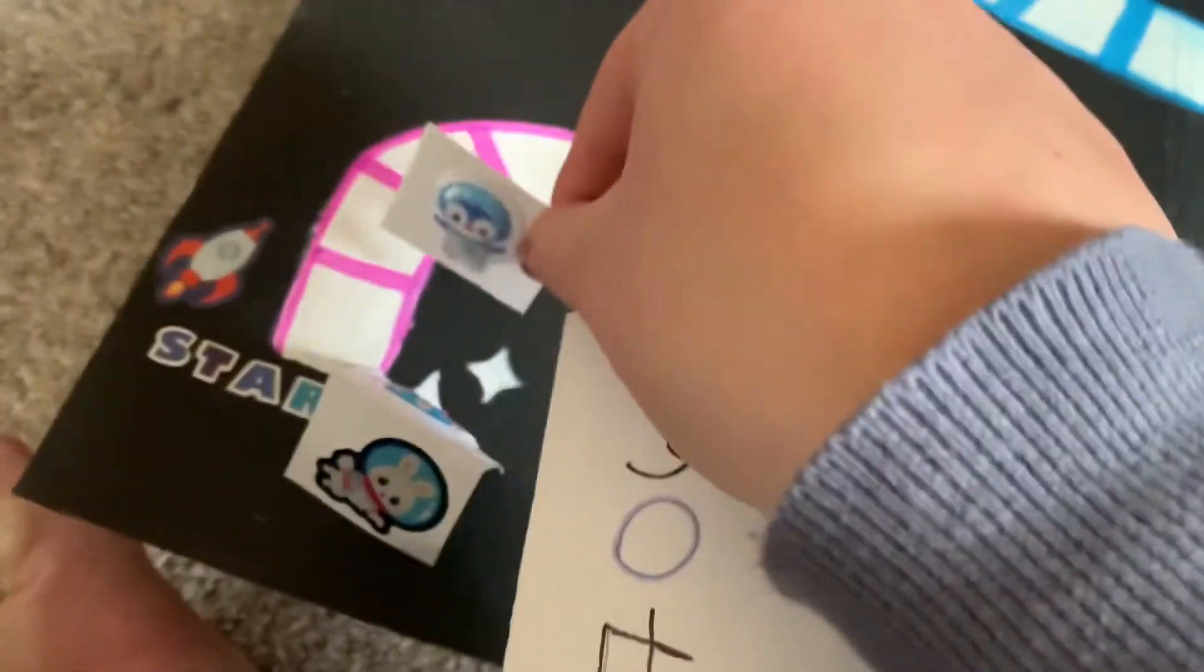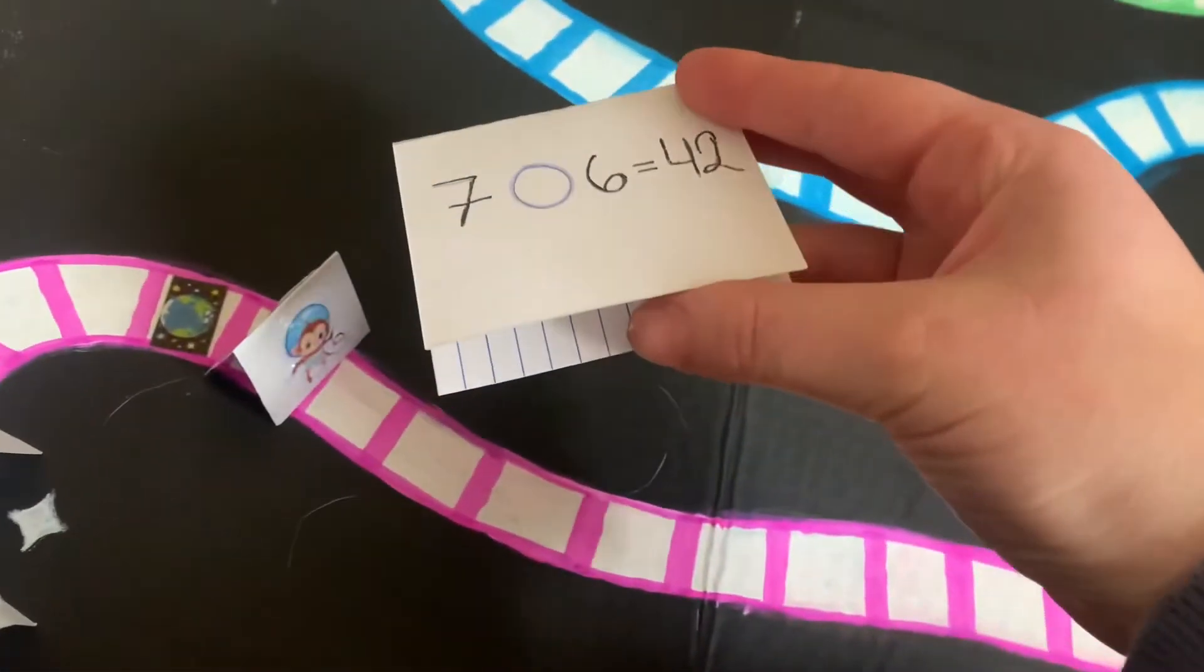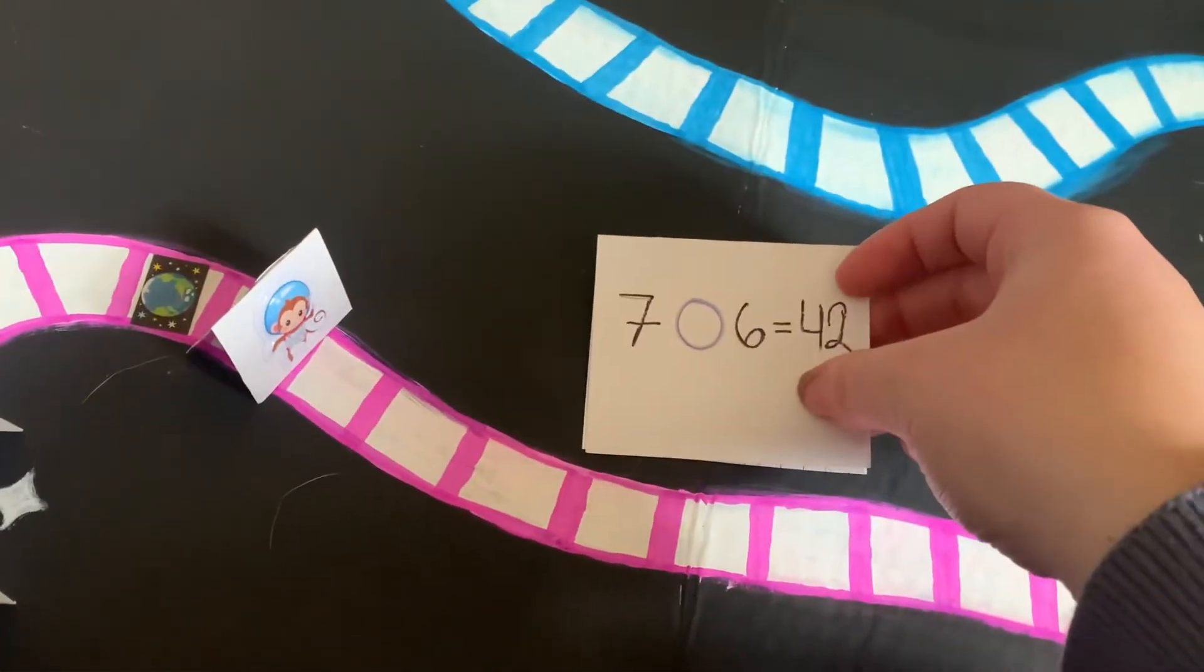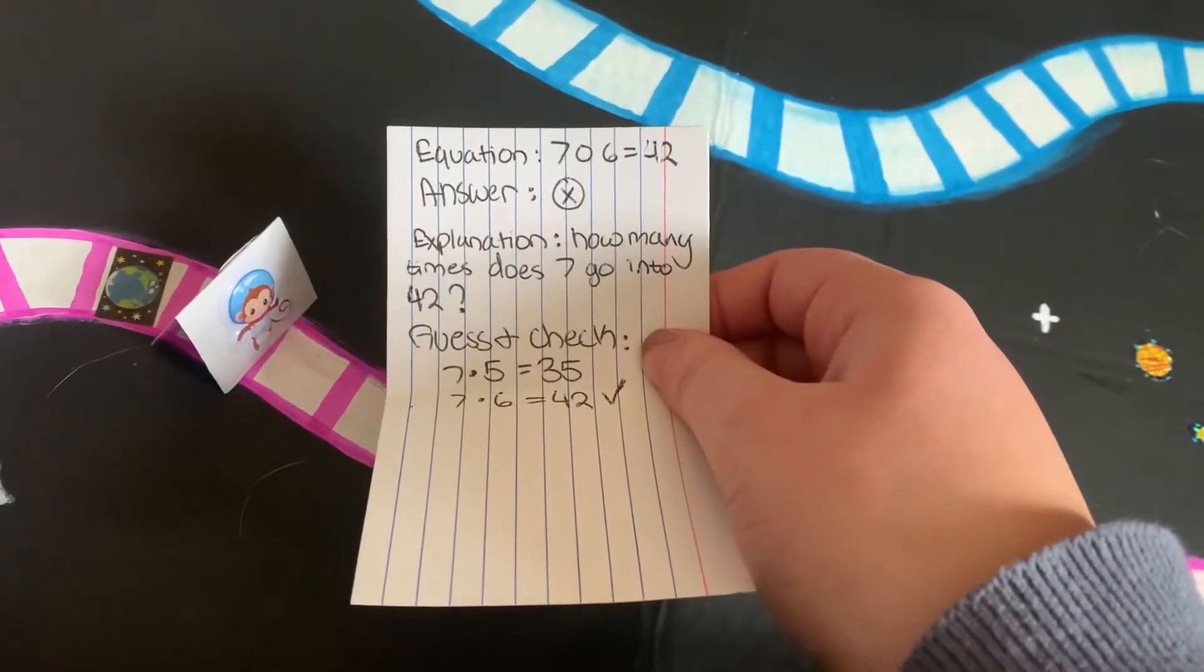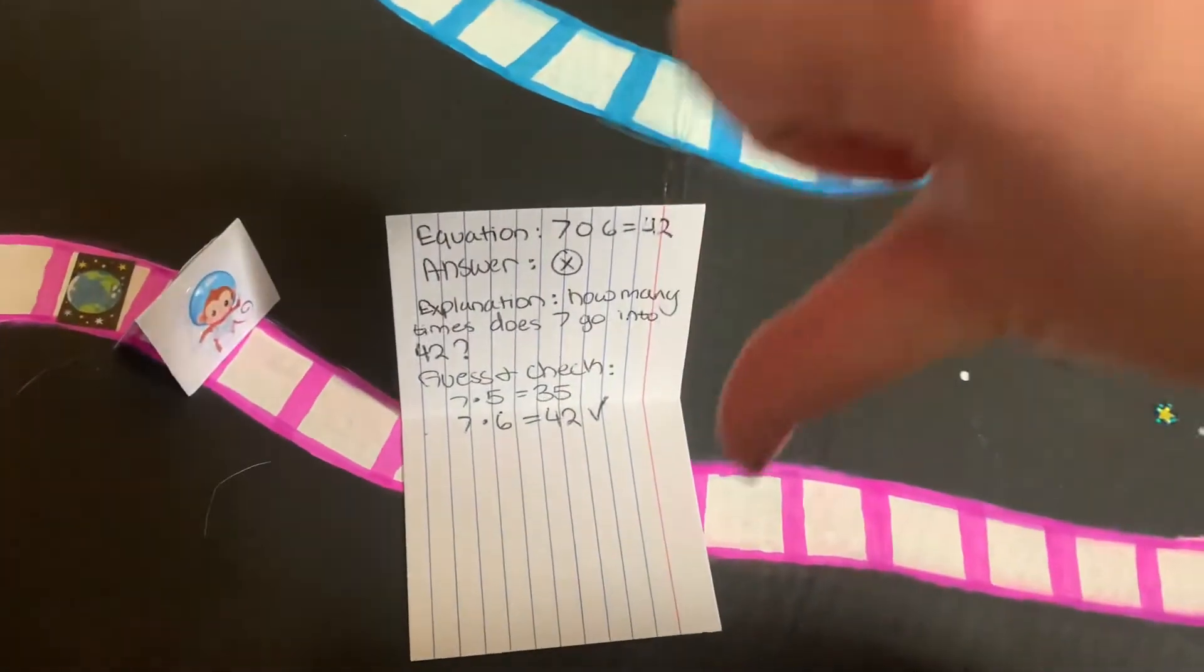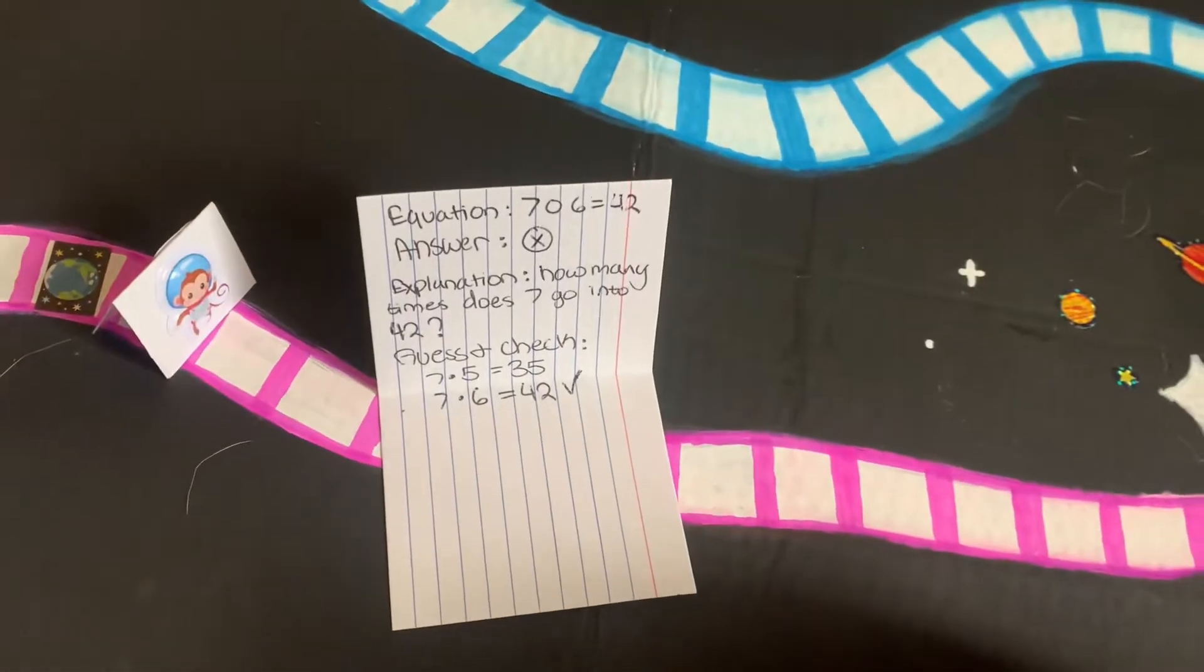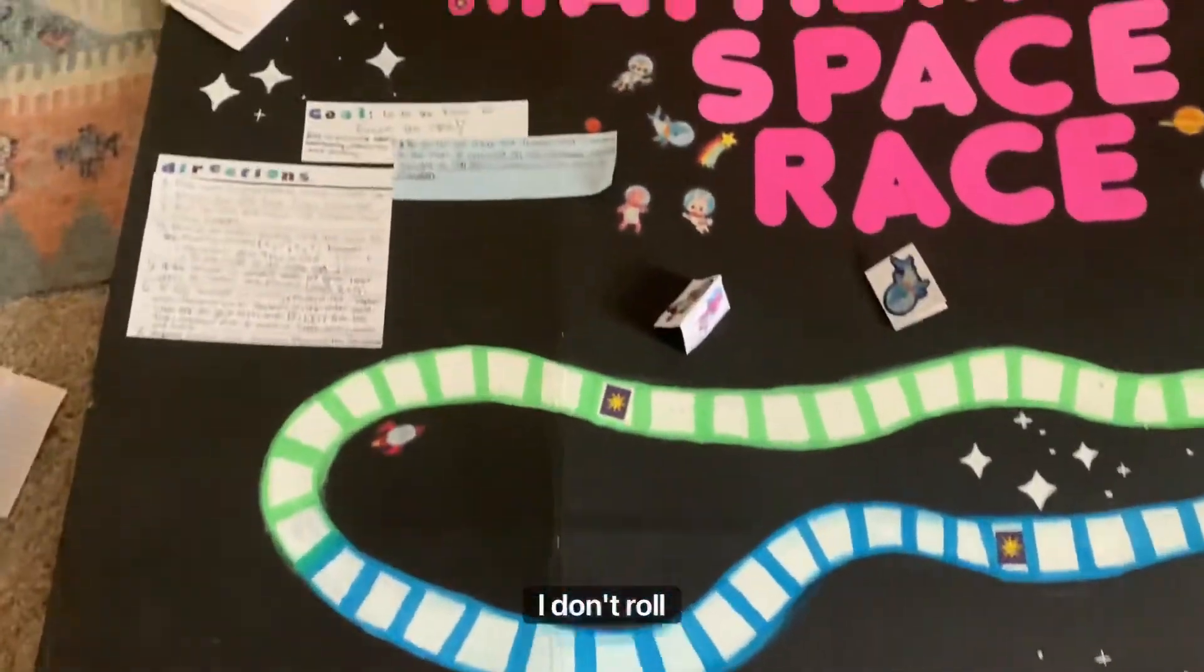And this one, for example, says 7 blank 6 equals 42. I think the answer is addition. Turn it around and that's wrong. It's multiplication. So I wait till my next turn and I don't roll.